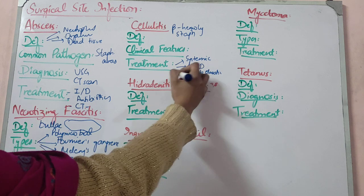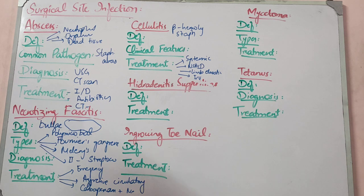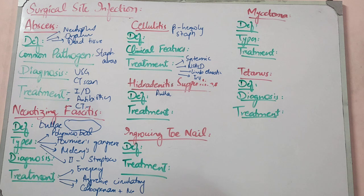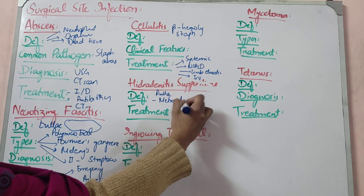Supportive therapy with IV fluids if needed. Then another condition: a female with fever and multiple discharging sinuses in her axillary region — that is hidradenitis suppurativa. This is a chronic infection of the apocrine glands, affecting females most commonly in the axillary or groin region. If it is a couple of sinuses, go with antibiotic therapy — use anti-anaerobic therapy, metronidazole.